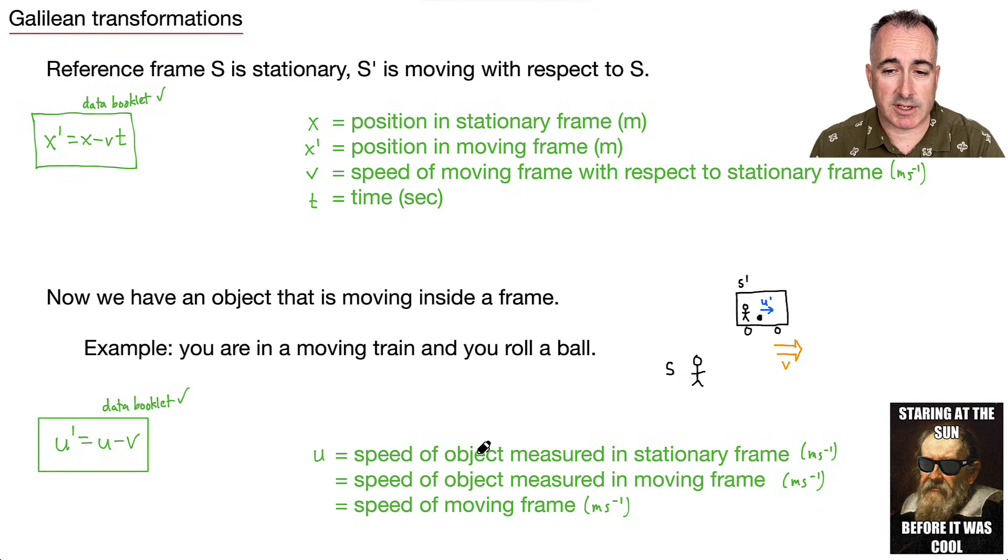So we have U, which is the speed of the object measured in the stationary frame. So if I'm sitting there watching this ball, that's how fast I'm going to see that ball moving. And then we have the speed of the object measured in the moving frame. So if you're in the train measuring the speed of the ball, that's what you'll measure. And of course, V is the speed of the moving frame. So that V is the same here, moving frame speed.